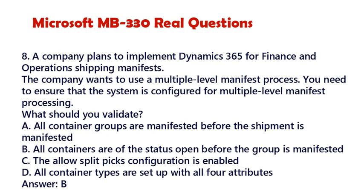Question 8. A company plans to implement Dynamics 365 for Finance and Operations Shipping Manifests. The company wants to use a multiple-level manifest process. You need to ensure that the system is configured for multiple-level manifest processing. What should you validate? A. All container groups are manifested before the shipment is manifested. B. All containers are of the status Open before the group is manifested. C. The Allow Split Picks configuration is enabled. D. All container types are set up with all four attributes. Answer: B.